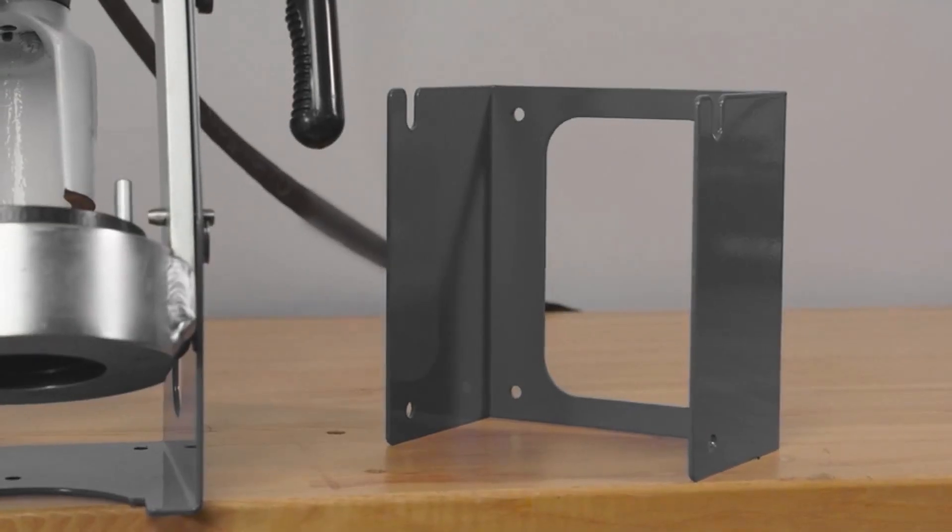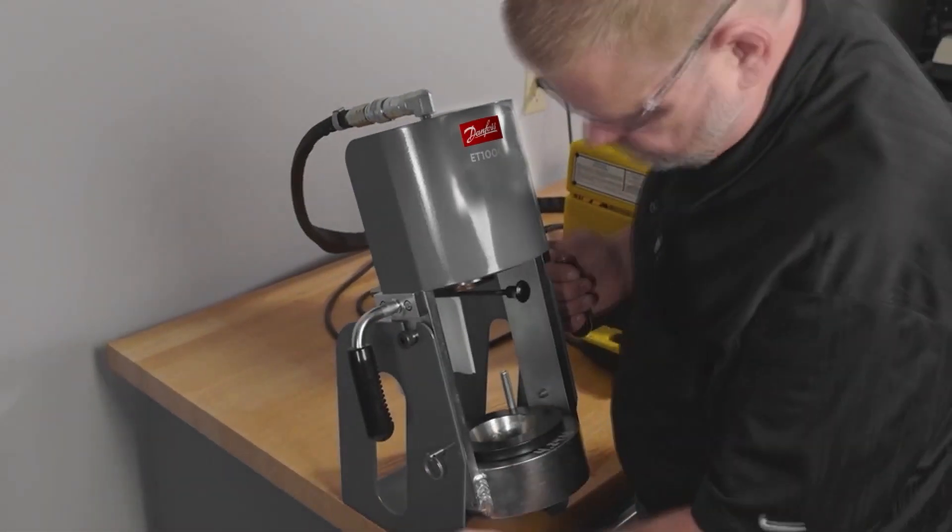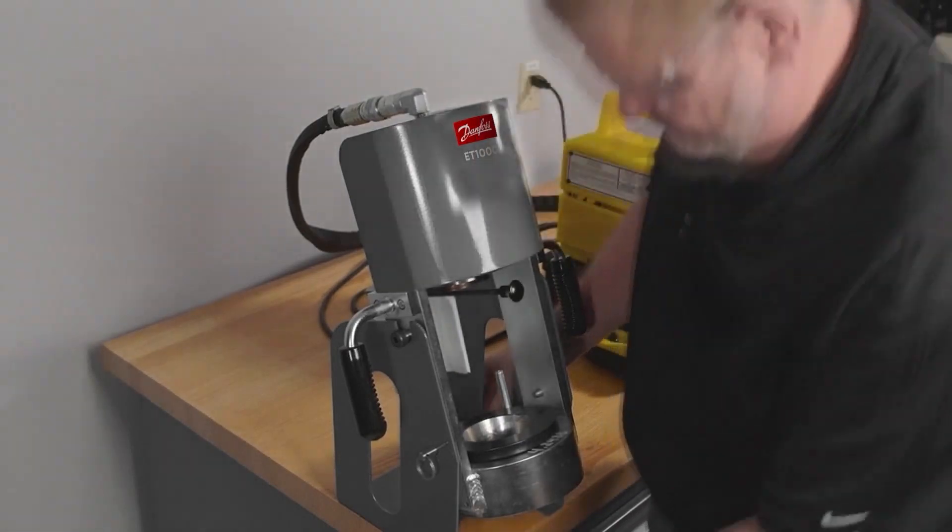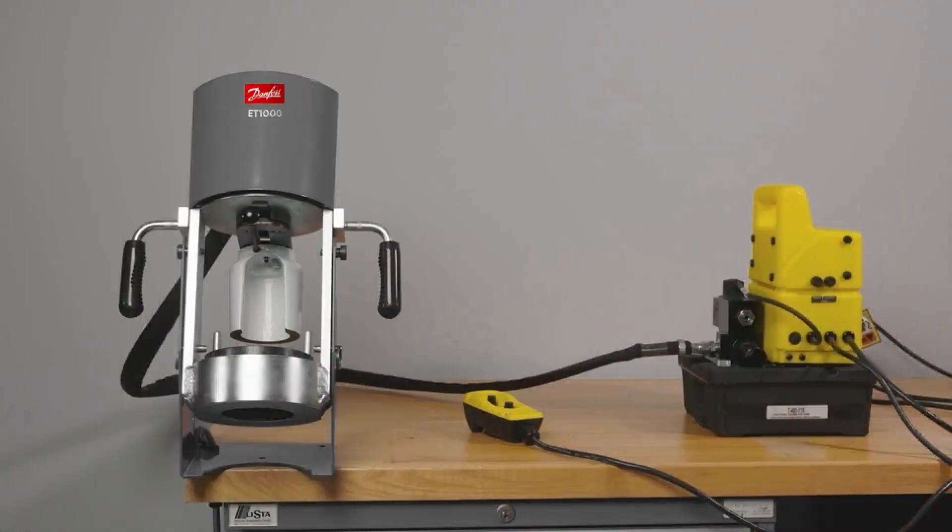Once the crimp machine is secured to a stable work surface, place the power unit beside the press. It's important that you follow the operator's manual through the entire setup procedure. Today we're going to show you the 110 volt electric pump option.